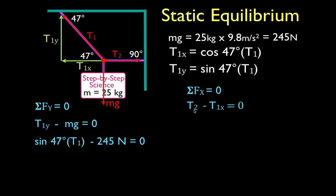And I'm going to do the same thing for the forces in the x direction. T2 minus the cosine of 47 times T1 is equal to 0 because T1x, as we wrote down up here, is the cosine of 47 times T1.